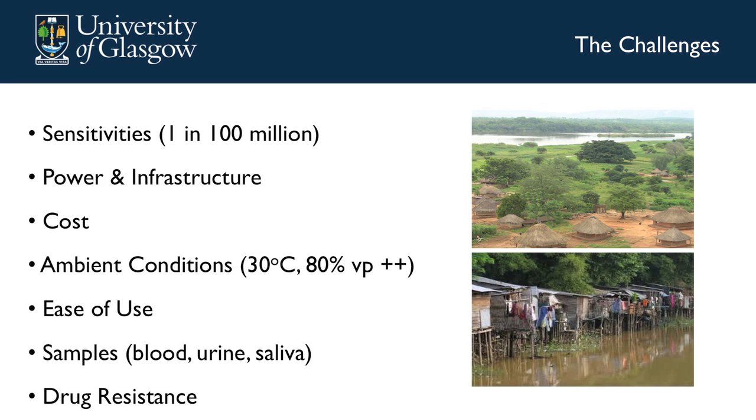The realistic signal to noise of this is of the order of sometimes as high as one in a hundred million, so we're trying to find one cell which might be a parasitic cell sitting amongst a cocktail of other cells, which would most typically be blood cells, and there may be up to a hundred million other cells.